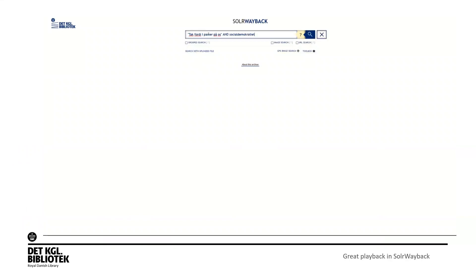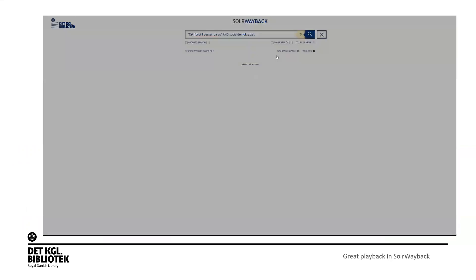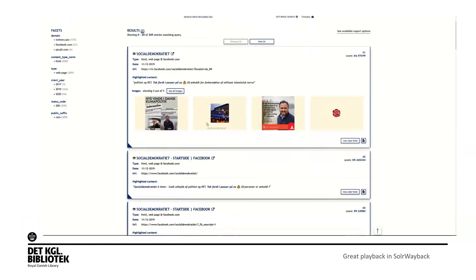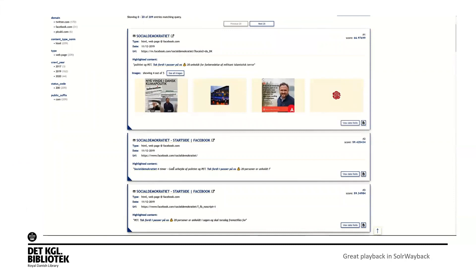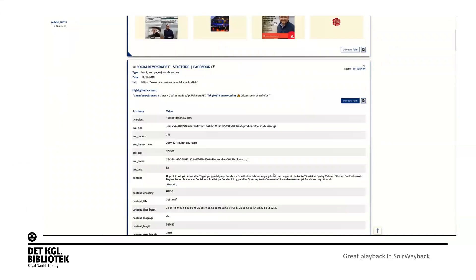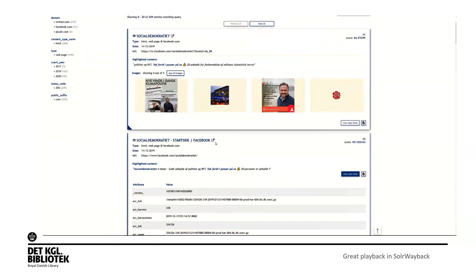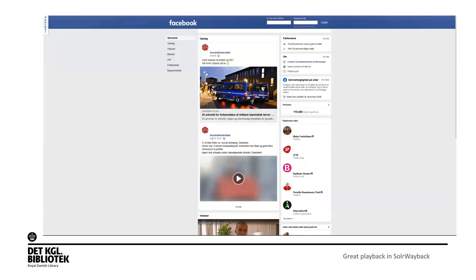I want to search for 'thank you for taking care of us' and Socialdemokratiet, which is the biggest party in Denmark. It has already loaded. You can see it's a Facebook page that says 'thanks for taking care of us.' I can view the data fields, see all the information, see where it's from, specify an alternative playback engine, and then click to play back the Facebook page — and there it is: 'thanks for taking care of us.'